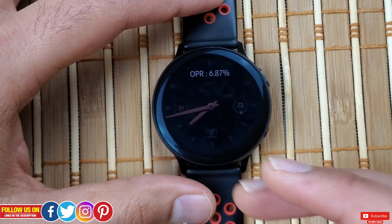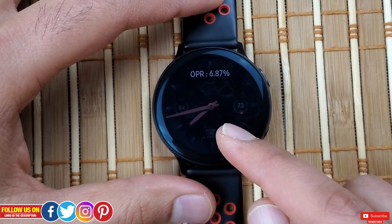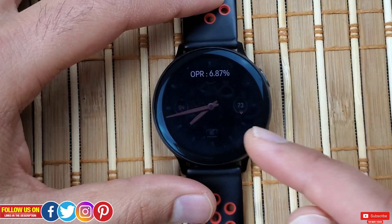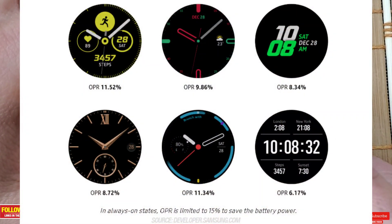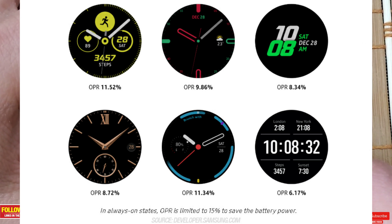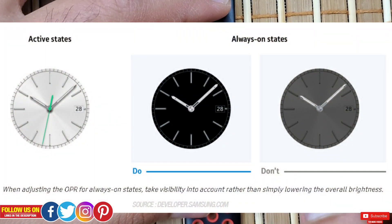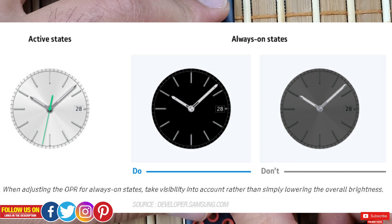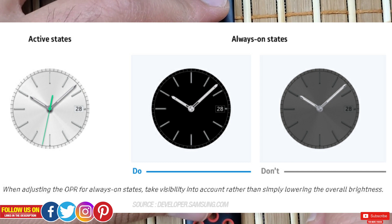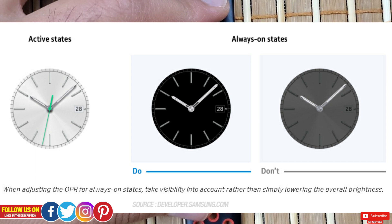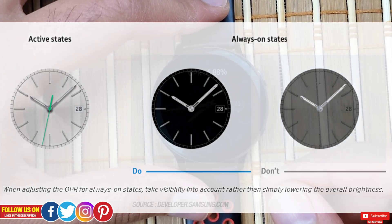So the OPR increases when more pixels stay on and when the sum of the RGB value is higher. With AMOLED displays, having more black means the pixel stays off, so that's why you can see a lower OPR value on watch faces like these. This is why Samsung recommends taking visibility into account rather than simply lowering the overall brightness. In the don'ts, the brightness is just lowered, but in the dos, the watch face looks more crisp.